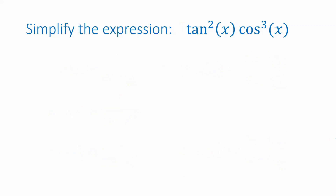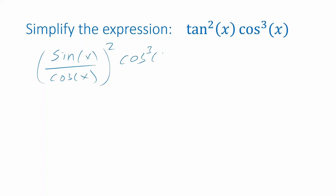Let's see how we can use these properties to simplify an expression like tangent squared of x times cosine cubed of x. The first thing I'm going to do is recall that tangent is the same as sine over cosine, and therefore tangent squared is the same as sine over cosine, quantity squared. Then I can distribute this exponent to the numerator and denominator in this fraction, giving me sine squared of x divided by cosine squared of x, times cosine cubed of x.